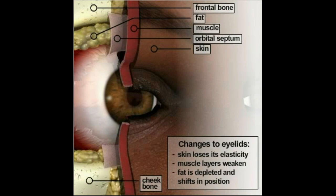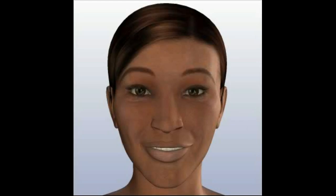While eyelid surgery addresses these problems, the procedure cannot correct crow's feet, dark circles under the eyes, or sagging eyebrows. In these instances, eyelid surgery performed with other procedures may produce better results.